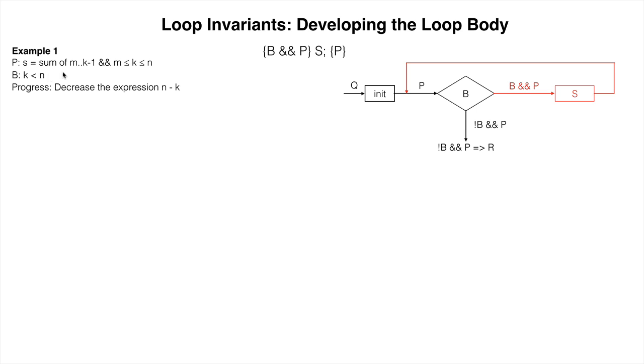The progress we want to make on each iteration of the repetend is decrease the expression n minus k. By decreasing the value of this expression, k will get closer and closer to n until the loop condition is no longer true. This means we will make progress towards the termination of this loop.